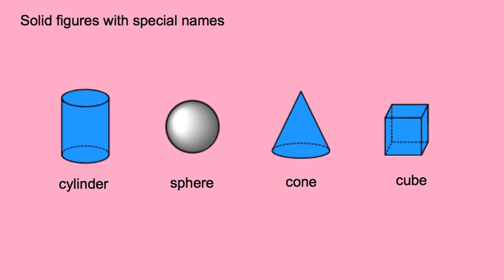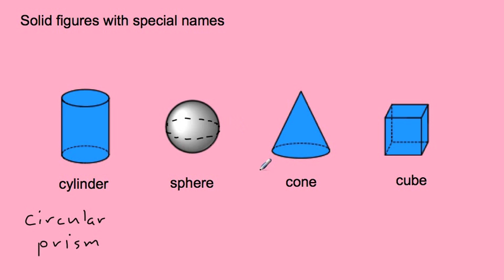These are the solid figures that have special names. If you just took a look at this shape right here, it has a circle on the bottom and then a circle on the top. So if we were naming it like before, it would be a circular prism. But instead of circular prism, we just say that's a cylinder. And this figure right here is a sphere — it has an imaginary circle that cuts through the middle of it. And then we don't call this a circular pyramid; we just call it a cone. And then if all the sides are exactly the same length and they form squares on each face of the solid figure, we call that a cube.